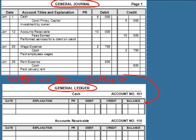Posting isn't difficult, but it will take some practice to remember the steps. There are six steps to the posting process. When we post, we always start at the beginning of the general journal and work our way down the page. We start with the first journal entry and the very first account in that journal entry.